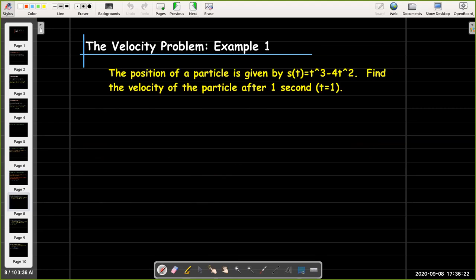Let's look at a couple of examples. We're given the position function as s(t) equals t cubed minus 4t squared, and we are asked to find the velocity after one second, that is when t equals one.